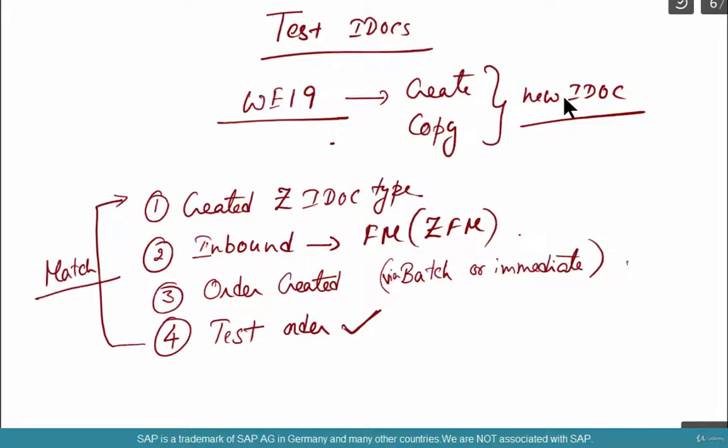It's a match. Meaning, is it being created for the right customer, right ship to, right sold to, right PO number is there, right materials are there, right quantity is there, the expected price is coming up. That's what I mean by a match. And that data has to match. That's typically what happens when you do testing.